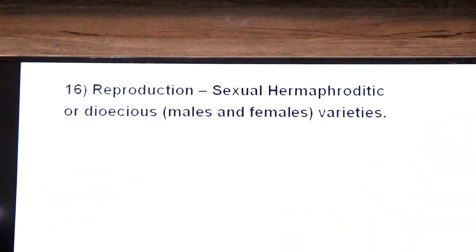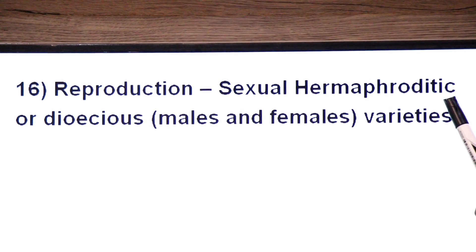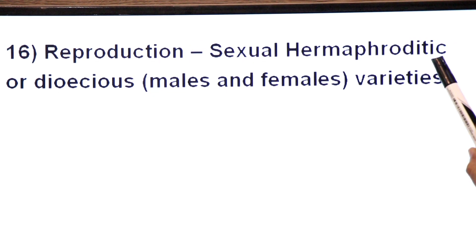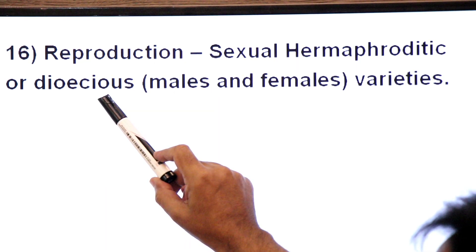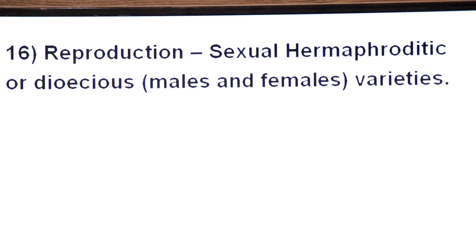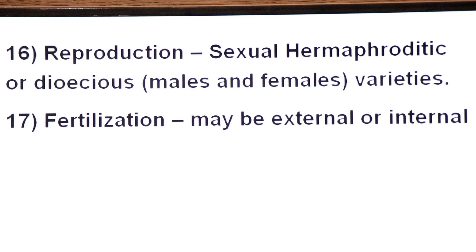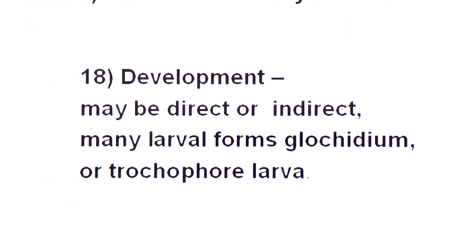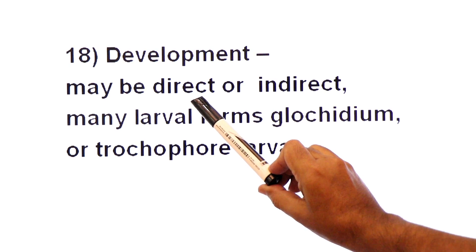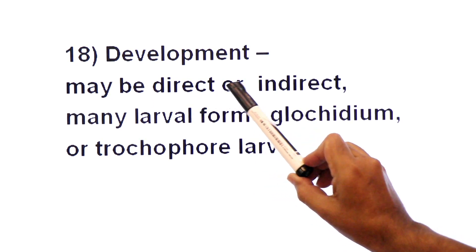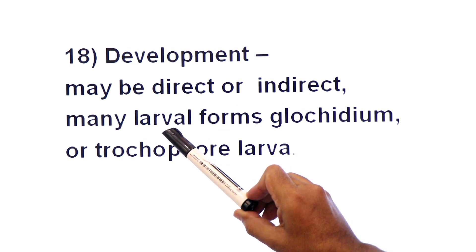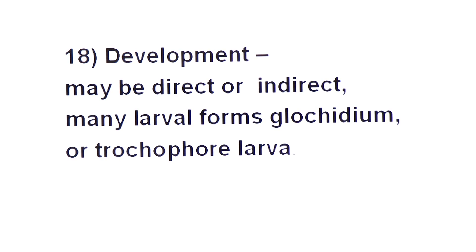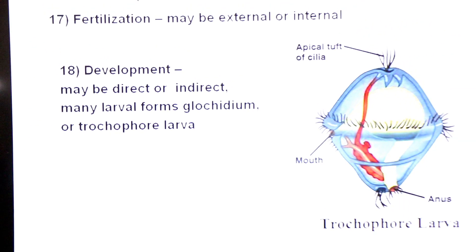Reproduction: sexually, they are hermaphroditic — an animal in which both sexes are present, having both testes and ovaries. But some species are dioecious, meaning sexes are separated into males and females. Fertilization may be external or internal; development may be direct or indirect. In direct development no larval form is involved, while indirect development includes larval forms such as glochidium larvae or trochophore larvae.